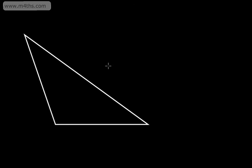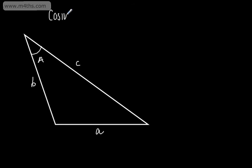I'm going to start off by drawing a triangle. I'm going to label this angle right here — this angle is going to be A. The opposite side, as with the sine rule, is A. This side is going to be B, and this side is going to be C. So we're going to look at the cosine rule to find missing lengths and angles in non-right angle triangles.